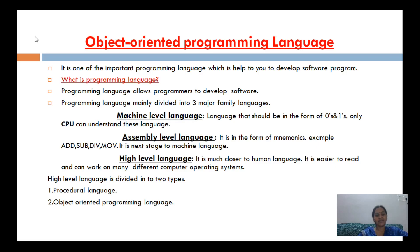Programming language is mainly divided into 3 major types: one is machine level language, assembly level language, and high level language.